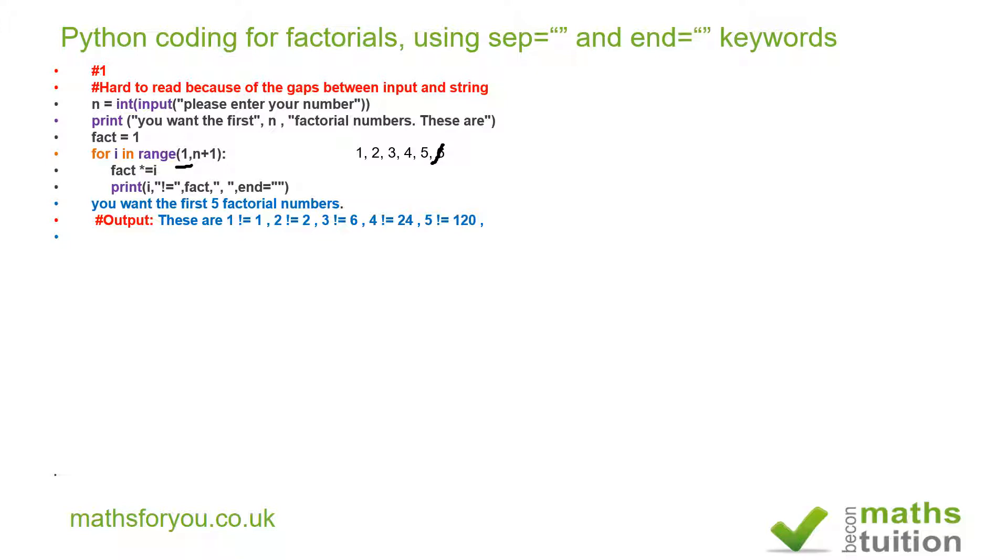Now what happens here is that we multiply our i with the one there. So one times one is one, hence the first factorial is one. We then move on and two times one is two, so we've got two there. Meanwhile, we store the number two there.